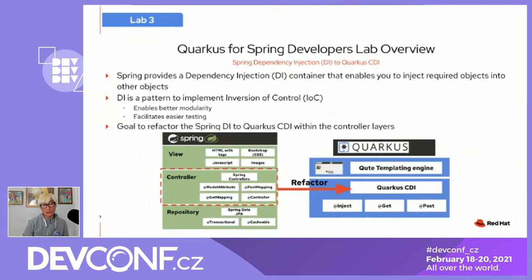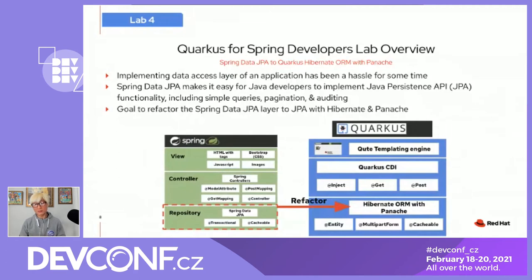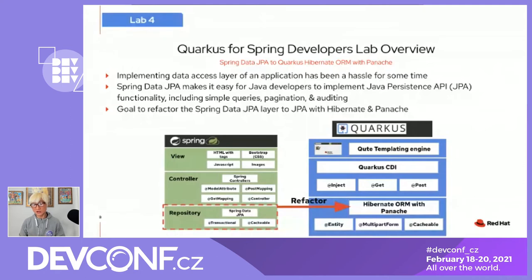Lab four is about data transactions. Spring Data JPA allows Java developers to communicate with a data store like a database to retrieve, create, insert, and update data — essentially CRUD functionality. Quarkus provides the same functionality and more, based on Hibernate ORM with Panache. With Panache, developers don't need to worry about creating getters and setters in plain Java classes, and you automatically get ORM mapping based on Panache components and Quarkus extensions.